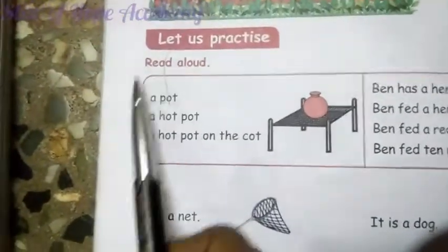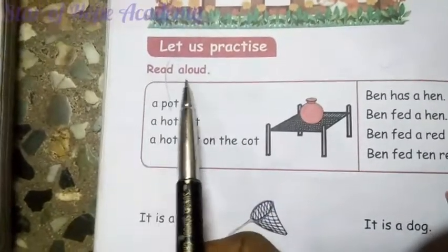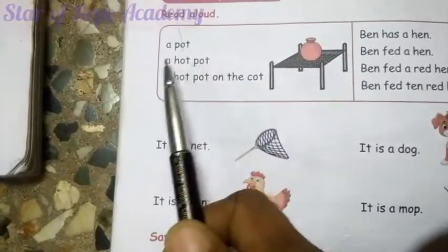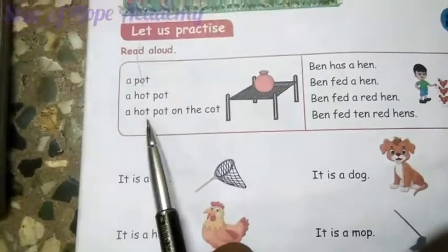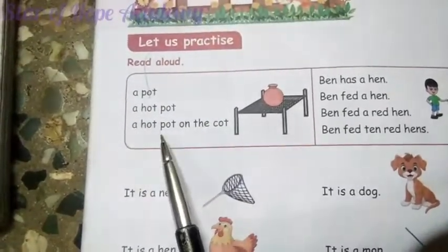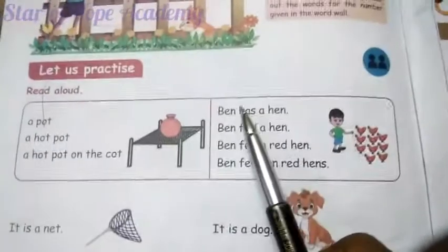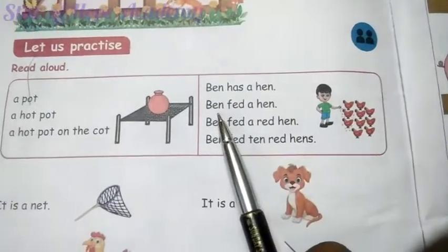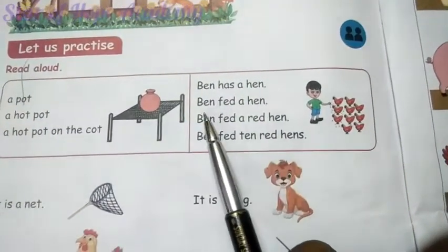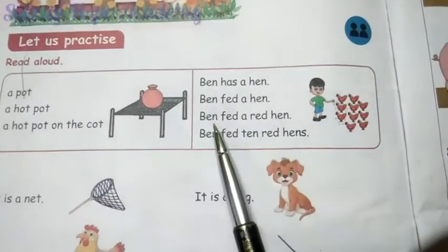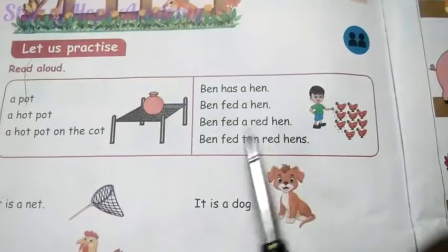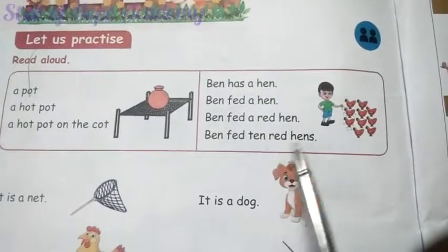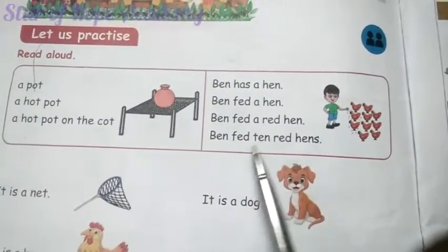Read aloud. Let us practice, say after me. A pot. A hot pot. A hot pot on the cot. Ben has a kin. Ben fed the kin. Ben fed the redkin. Fin fed the redkin. Ben fed ten redkins.